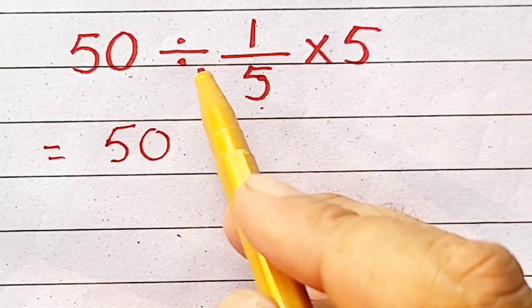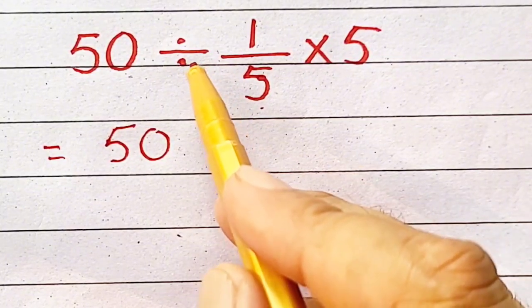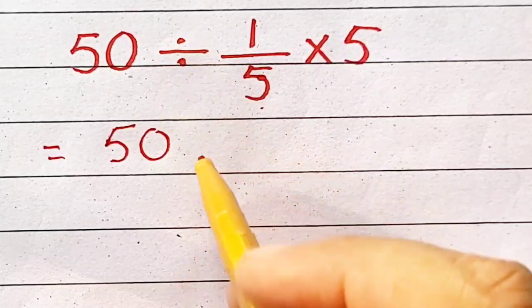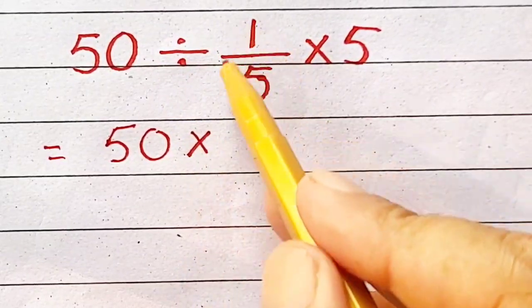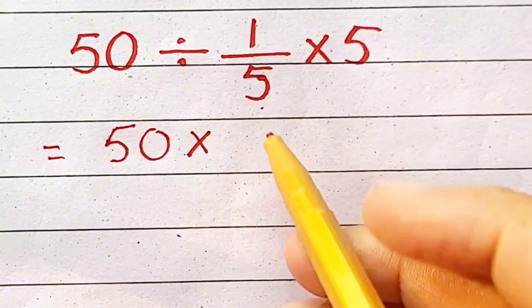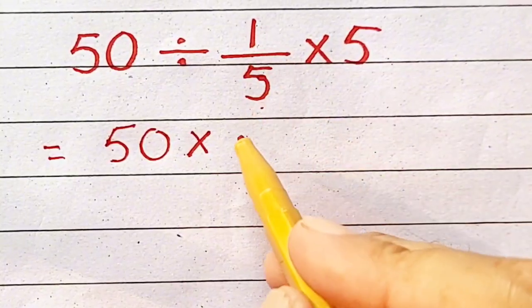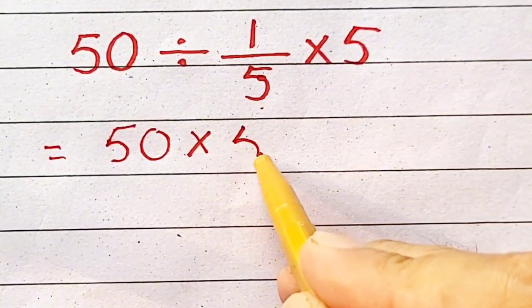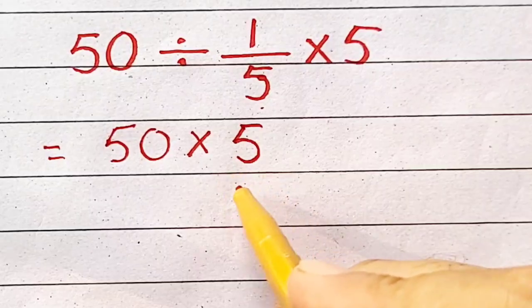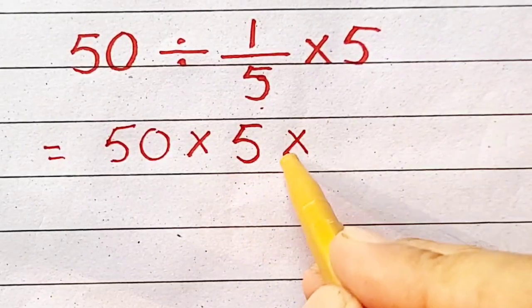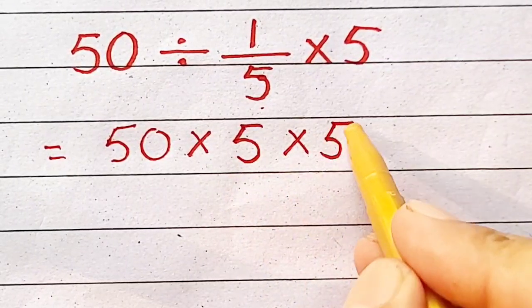Apply flip rule in which we convert division into multiplication, and flip this term. So, it is 1 over 5, and it will become 5 over 1, multiplied by 5.